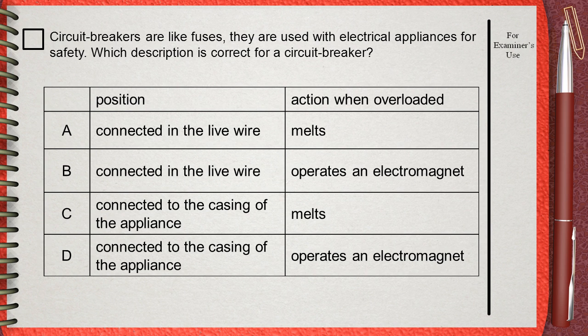Choice C: connected to the casing of the appliance and melts when it is overloaded. Choice D: connected to the casing of the appliance and operates as an electromagnet when it is overloaded.